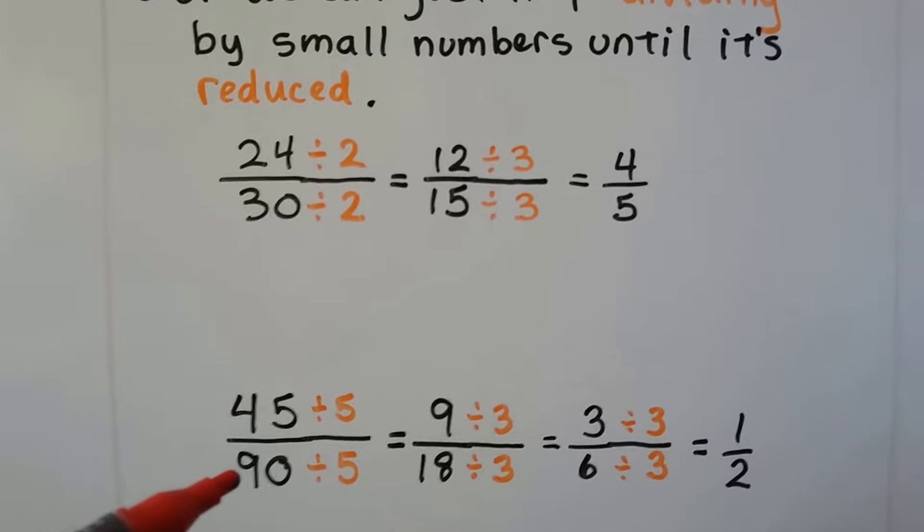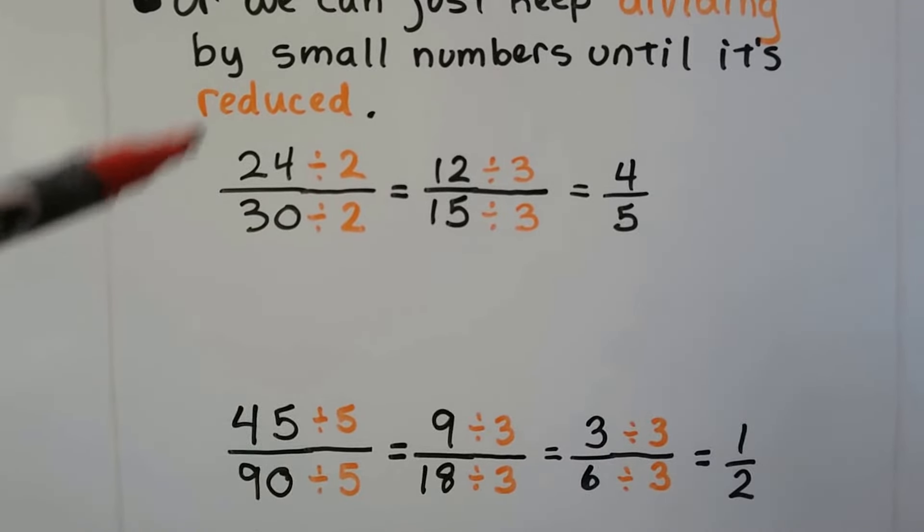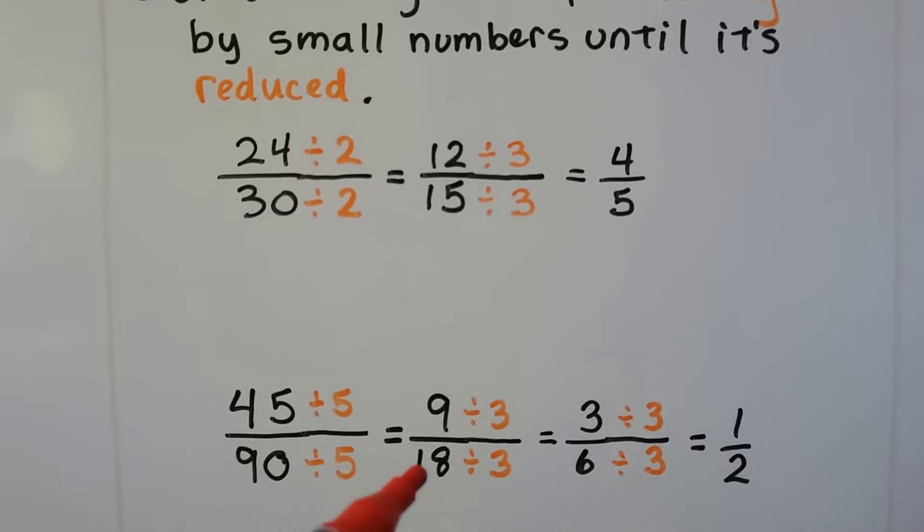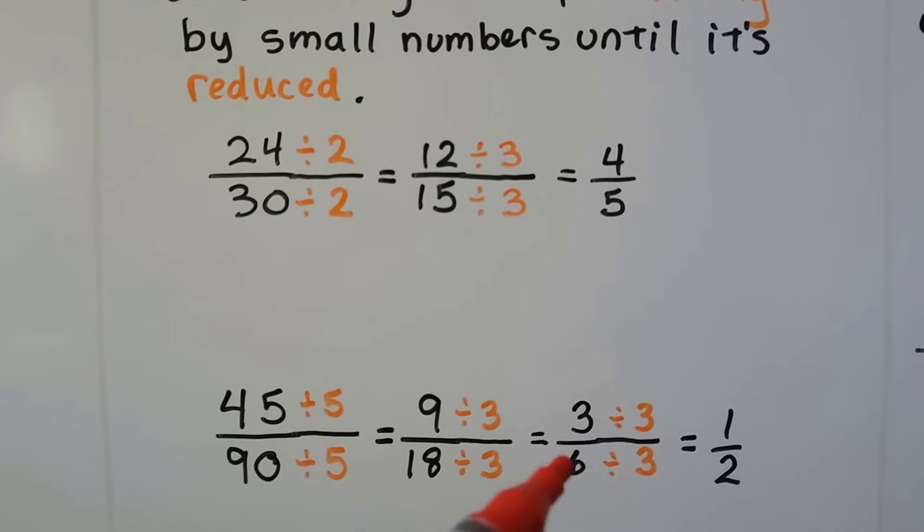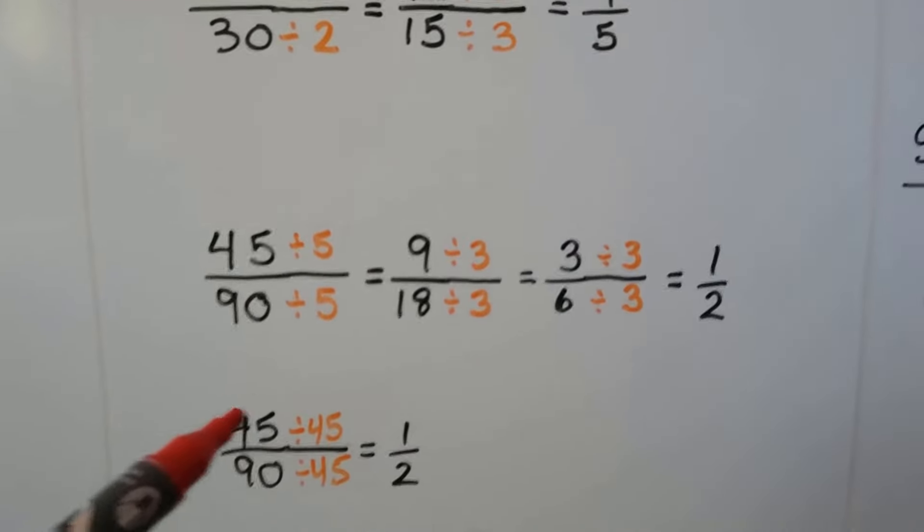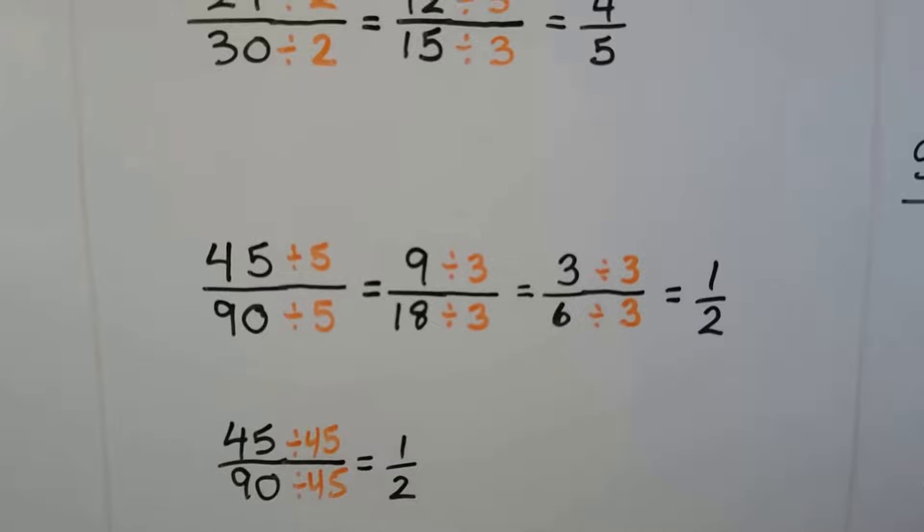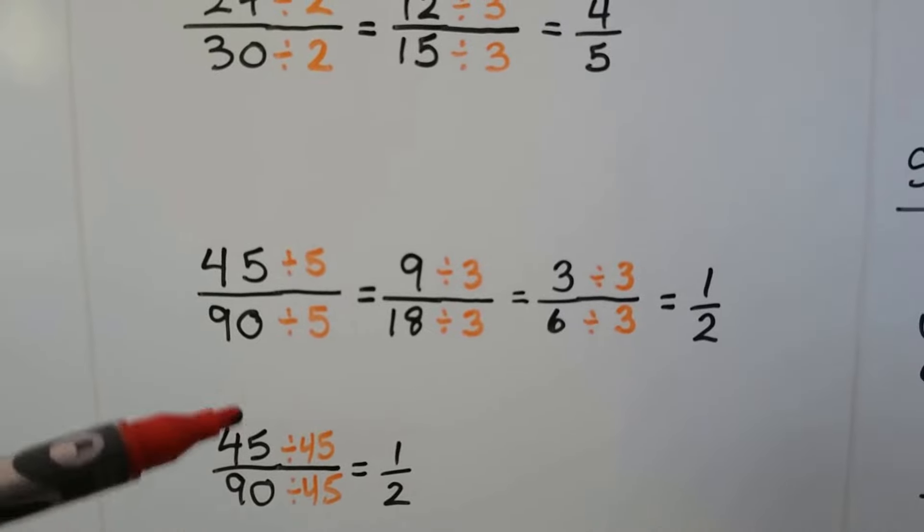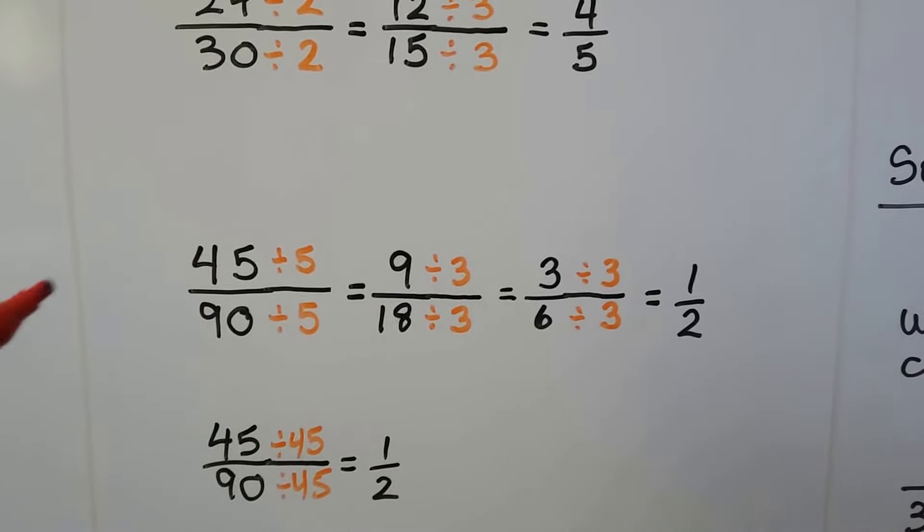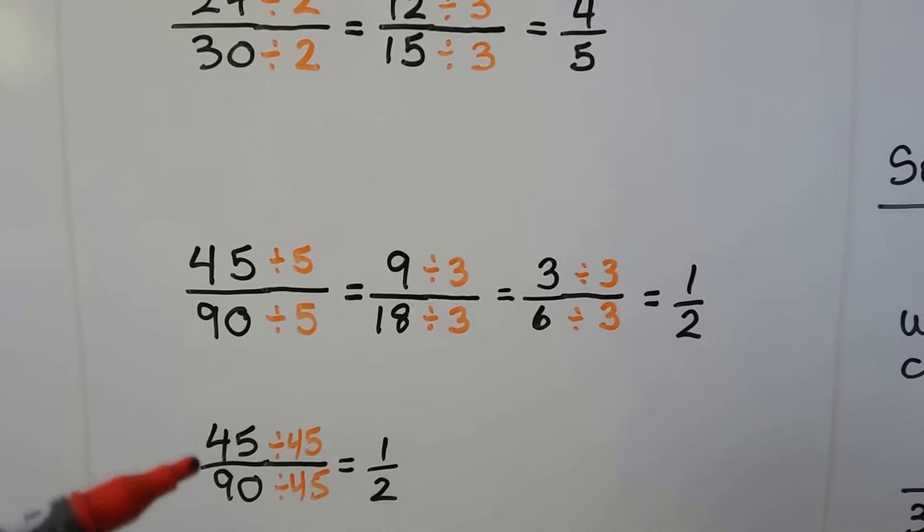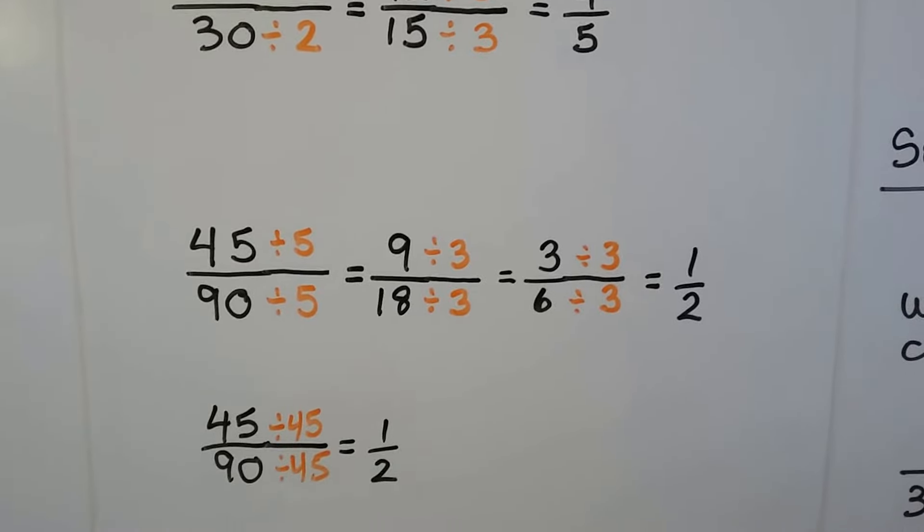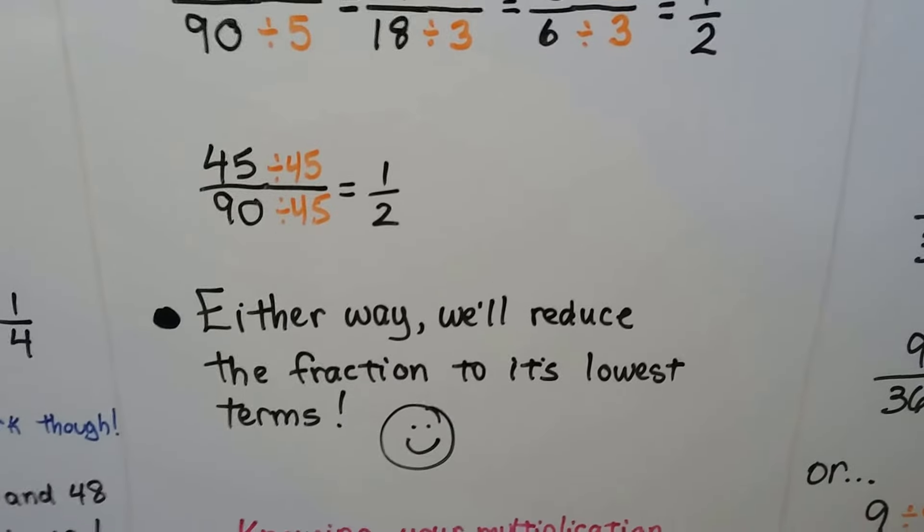Now we've got 45 90ths. We could do it this small, slow way and divide both numerator and denominator by 5. And we'll get 9 18ths. Then we can divide them both by 3 and get 3 sixths. Then divide both of those by 3 and get 1 half. Or we could have just divided the numerator and denominator by 45. Because 45 is half of 90. So you could do it this way and still get the correct answer. So don't flip out. Don't worry. If this is how you want to do it, go ahead. If you can grasp using the largest number they have in common, you'll save some time and it'll still be right. So either way, we'll reduce the fraction to its lowest terms.